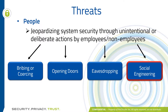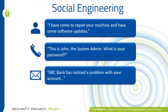And social engineering. Different types of social engineering might be if somebody comes into the office dressed as IT personnel saying they've come to repair your machine with software updates. They might call you and say, 'This is John, the system admin. What's your password? I need to get into your computer.' Or you might get an email saying, 'ABC Bank has noticed a problem with your account. We need you to log in and enter your credentials.'